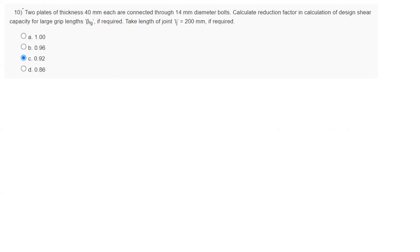Problem 10: Two plates of thickness 40mm each are connected through 14mm diameter bolt. Calculate reduction factor in calculation of design shear capacity BLG if required. The formula is: BLG equals AD upon 3D plus LG. We have 8 into D which is 14, divided by 3 into 14, and LG is the thickness of the total plate. So two plates 40mm means 2 into 40. If you calculate this value, we get 0.92. Therefore, option C is correct.